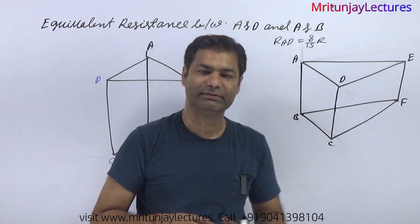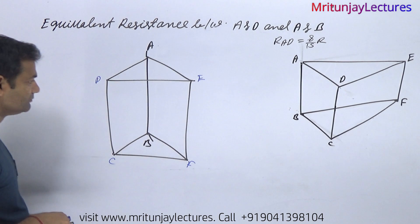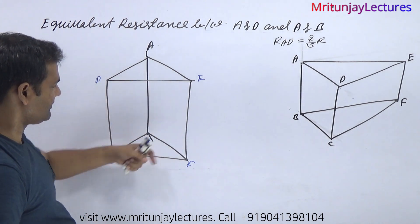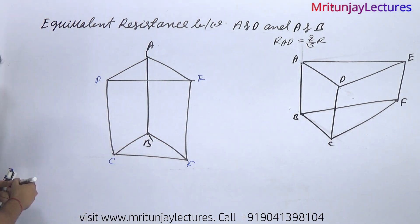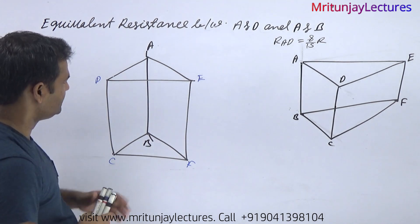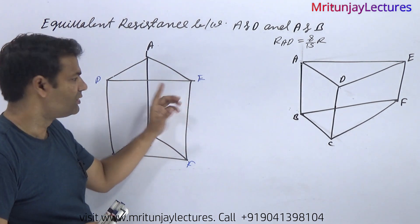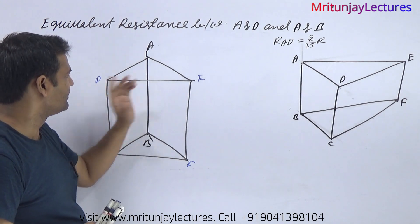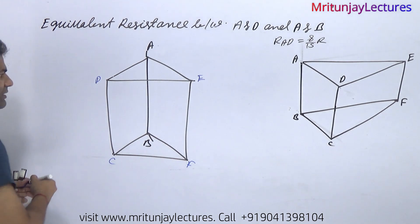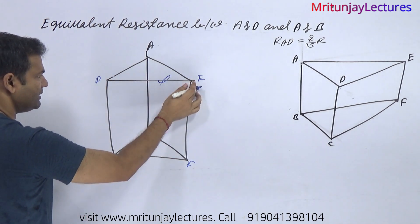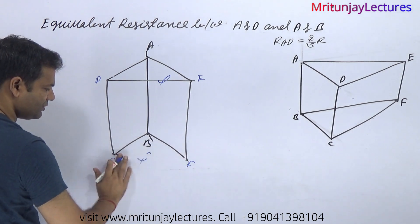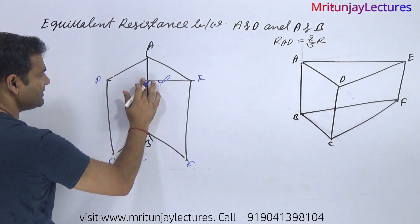Our focus now is on A and B. The nodes are D, C, E, F. Same representation here — this one is like this one. Due to symmetry, both nodes are at the same potential. If both are at the same potential, there is no current flowing through D to E or E to D. Similarly the same applies here.